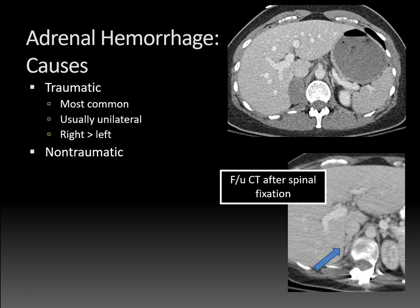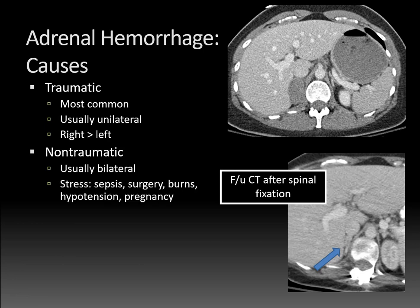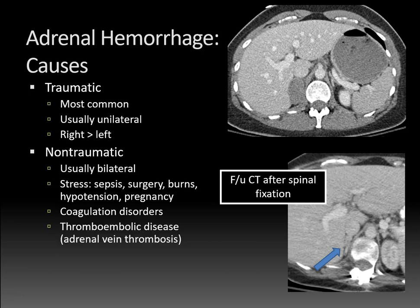There are also non-traumatic causes. Non-traumatic adrenal hemorrhage tends to be bilateral, whereas in trauma only about 20% are bilateral. Causes for non-traumatic adrenal hemorrhage include sepsis, surgery, burns, hypotension, and pregnancy. Various coagulation disorders also predispose to adrenal hemorrhage, as does thromboembolic disease, which can cause adrenal vein thrombosis. Adrenal tumors, particularly adrenal cortical carcinoma, can also cause hemorrhage. And of course there's idiopathic — the first case I showed you was idiopathic; it was never discovered what caused that patient's hematoma.